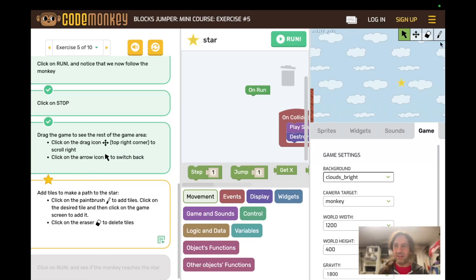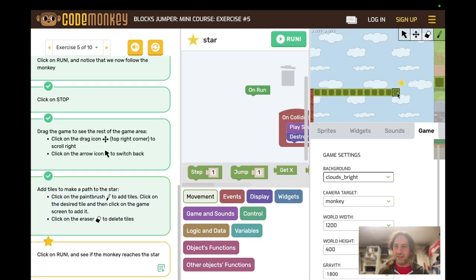Add tiles to make a path to the star. With this paintbrush you can select any of these tiles that are showing. And make a nice simple path. You can also erase them. If you erase them, the monkey will fall through.